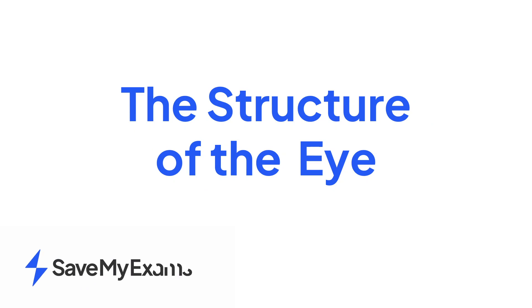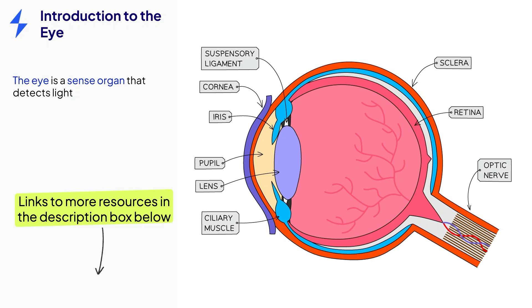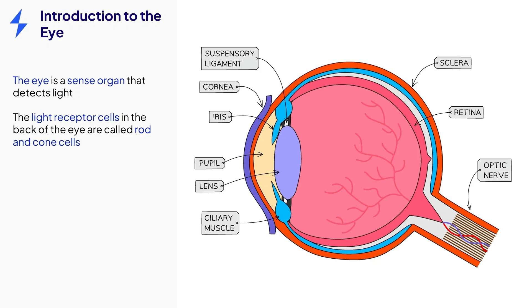This video is on the topic of the eye. The eye is a very important sense organ in the body. It detects the stimulus of light using specialized receptor cells called rod and cone cells.